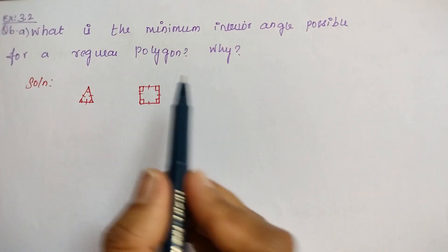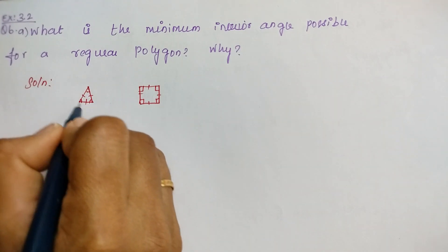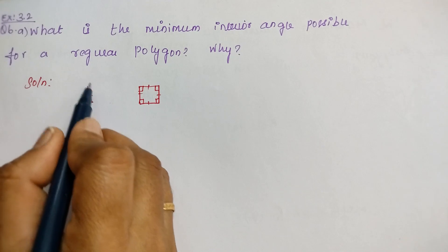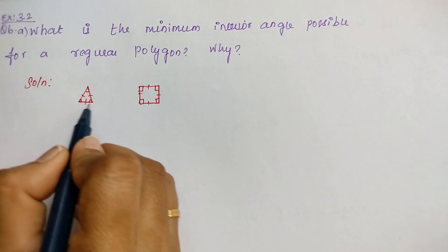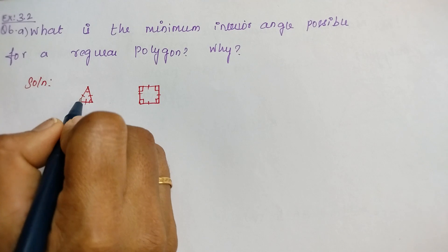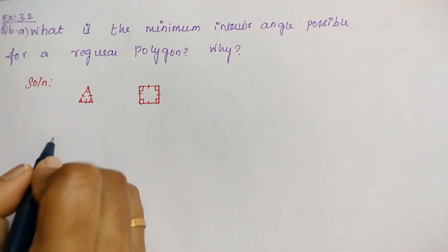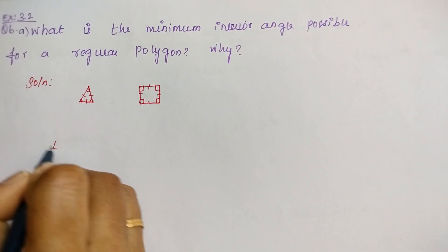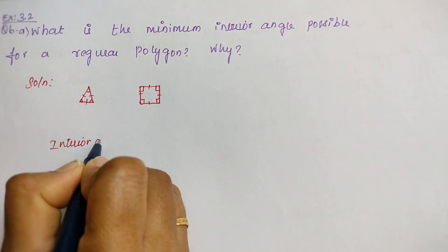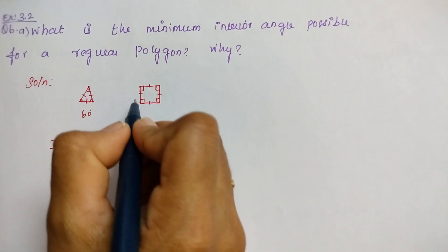Now, for the minimum interior angle — for this triangle, the sum of interior angles of this equilateral triangle is 180 degrees. So each angle is 60 degrees. The interior angle of this triangle is 60 degrees.